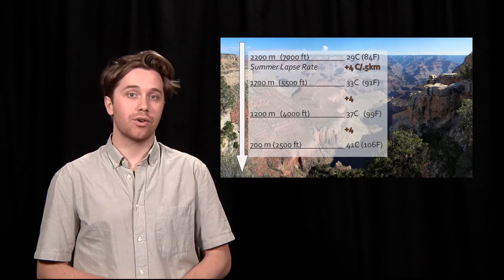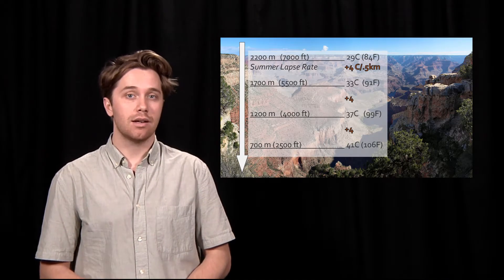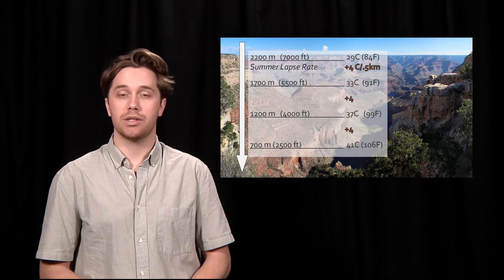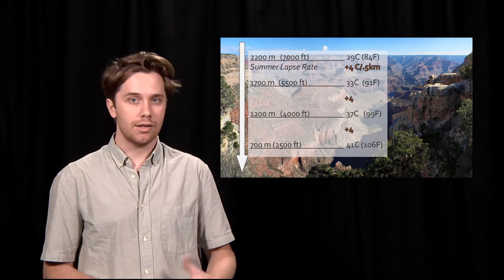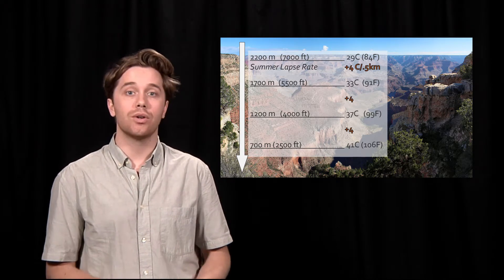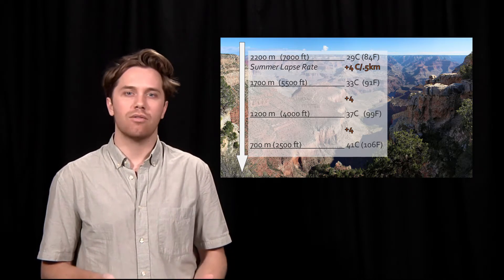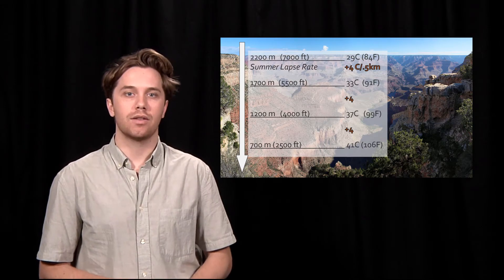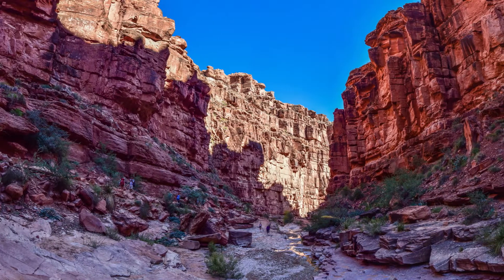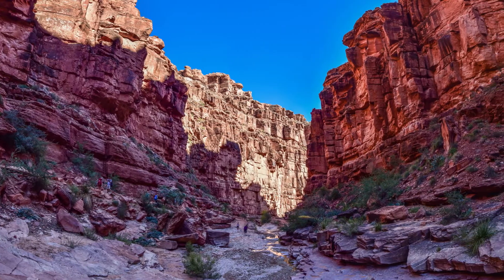Locations around the Grand Canyon also have localized climate variations caused by a multitude of factors, such as shadows, surface cover, and the amount of water found at the location. These are going to have influence on the temperature at that location. In this lab, we'll look a little bit closer at what influences the climate and the microclimatology of the Grand Canyon, and how that impacts plants and animals within its walls.